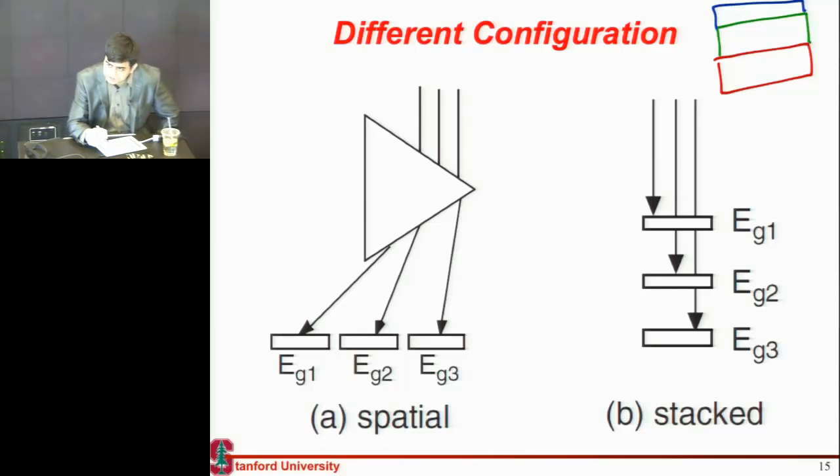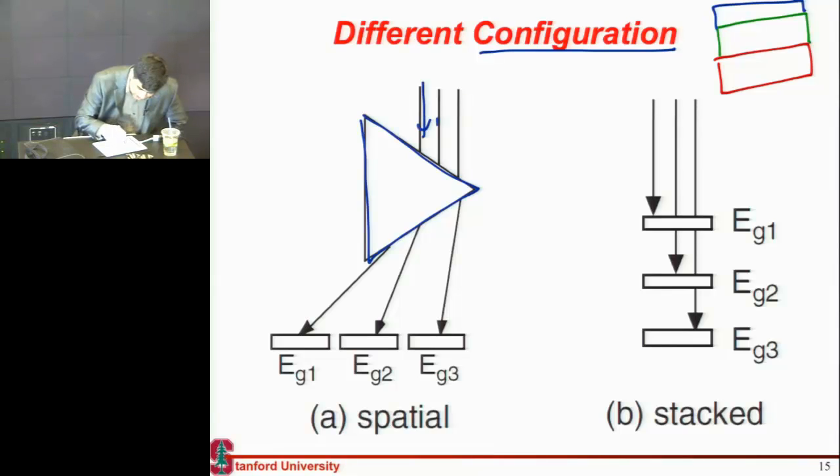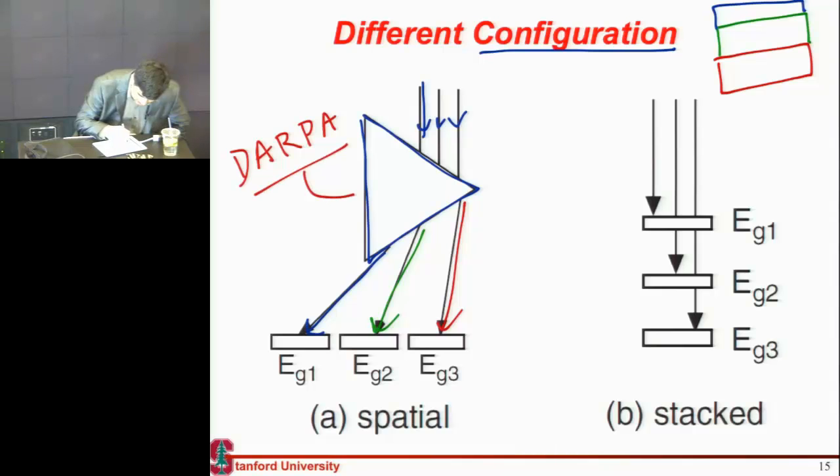That's not the only way to do it - in fact, that's many times a very restrictive way. There are many configurations you can use. Here's a neat idea: why not use a prism which you shine light on and it splits such that blue light goes to this cell, green light goes to this cell, and red light goes to this cell? DARPA had a big program to realize this - they funded a lot of research because it allows unrestricted, independent operation of all three cells.